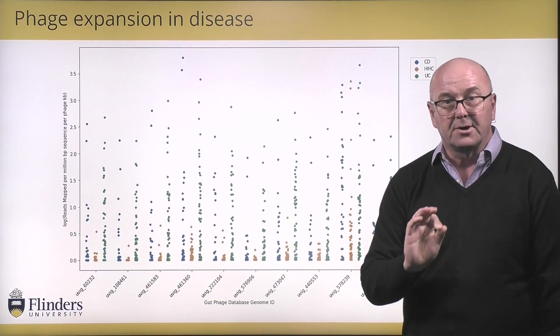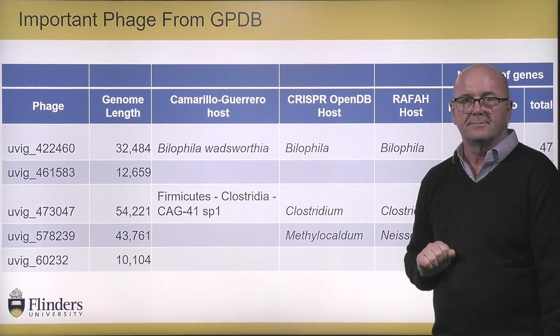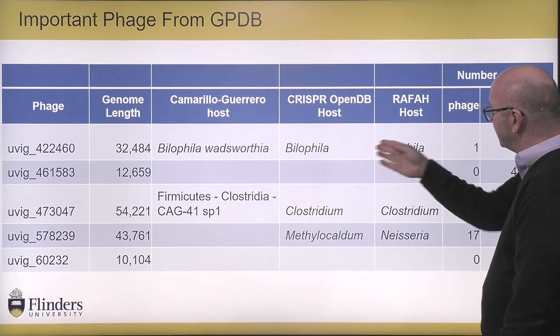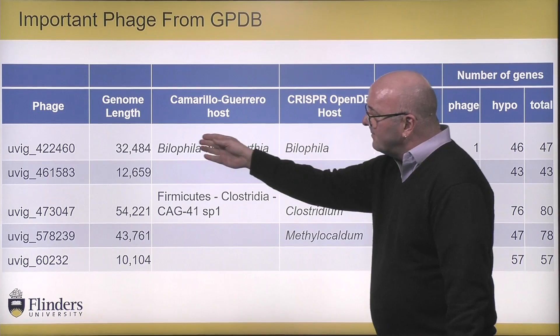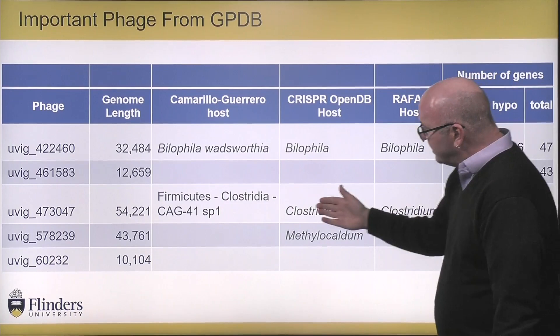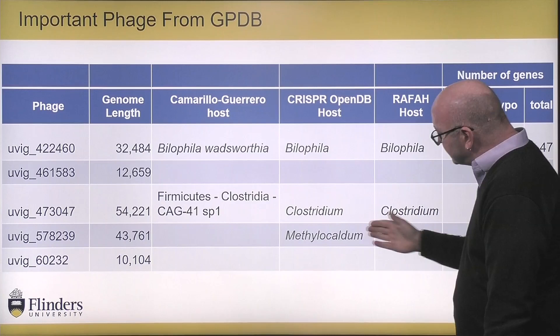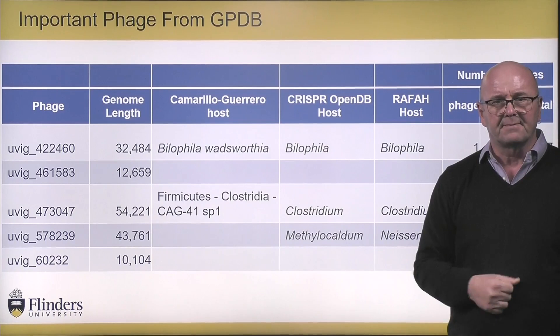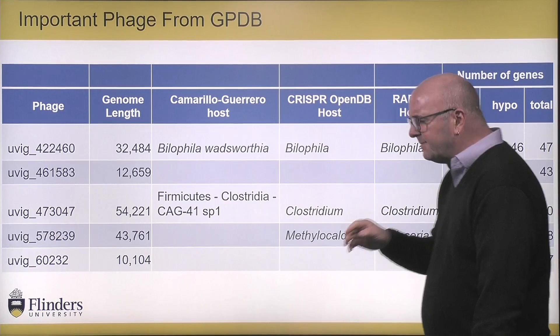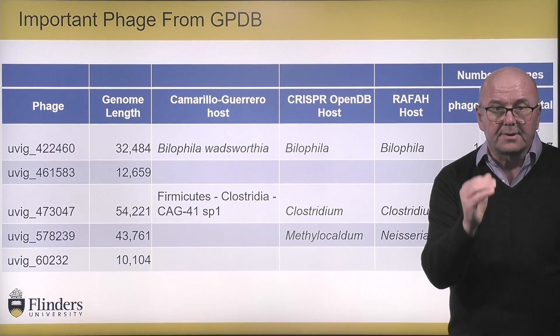One advantage of this dataset is that hosts have been assigned to each sequence. I've also added a couple of other host prediction tools — the CRISPR OpenDB tool and another tool we developed called RAFA, both published this year. We can identify hosts for some phages: for example, one phage appears to infect Bilophila, and we can identify phages that infect Clostridium that appear important in predicting health or disease. Then there are phages where we're not sure what they infect, and many where we have no idea what they infect yet they seem important in health and disease.